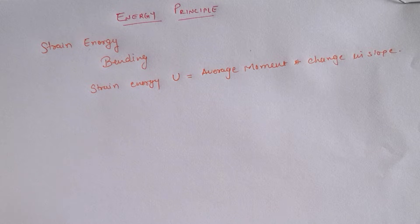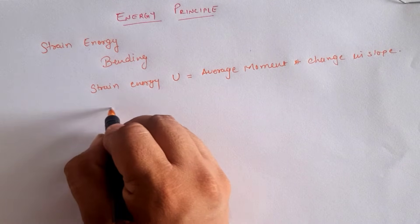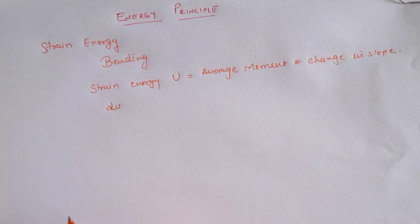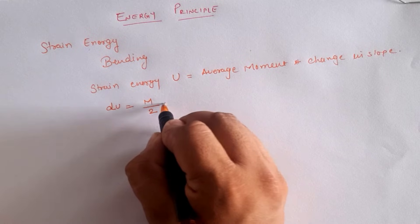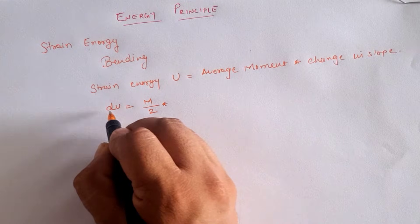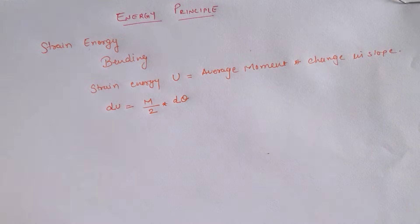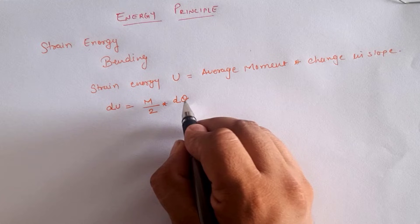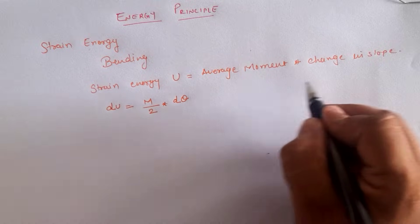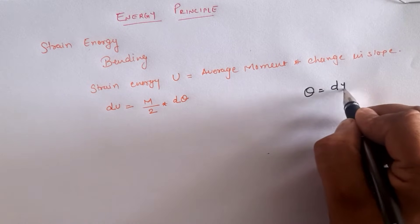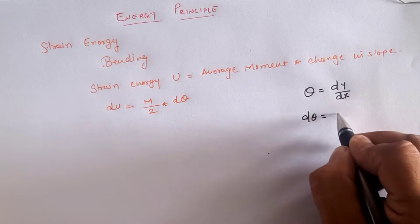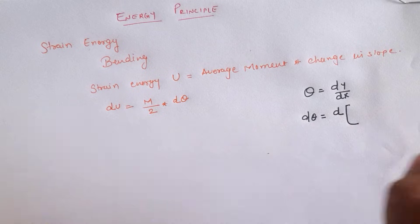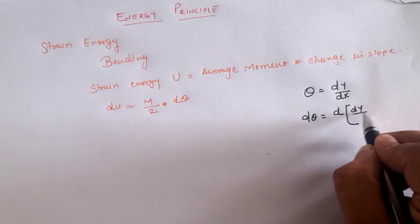If we assume a small element having length dl, then the strain energy in that small element is denoted by dU, where average moment is M/2 and change in slope in the smaller element is denoted by dθ. We know that θ is denoted by dy/dx, hence dθ equals d(dy/dx).